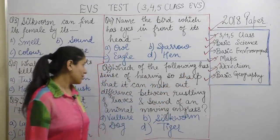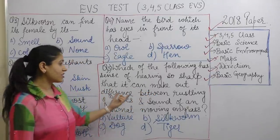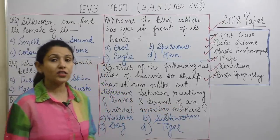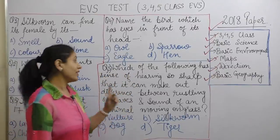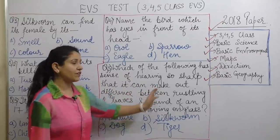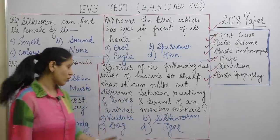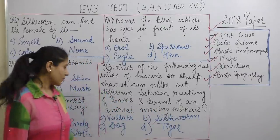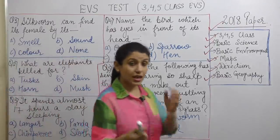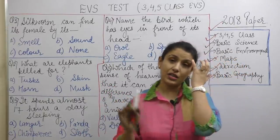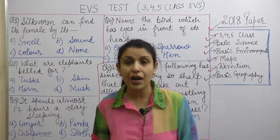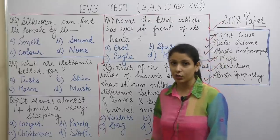Next question: Which of the following has a sense of hearing so sharp that it can make out the difference between rustling of leaves and the sound of an animal moving on grass — vulture, silkworm, dog, or tiger? Write all your answers in your copy — A, B, C, or D. These are not previous year questions; I have asked these for practice. Write in your copy.